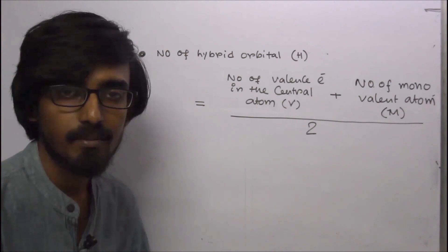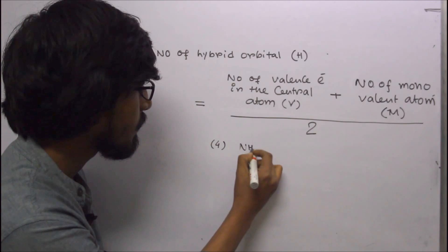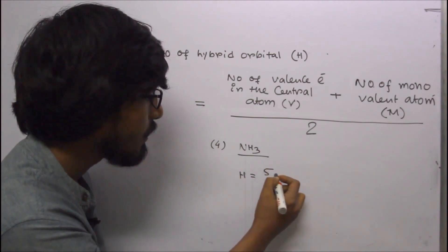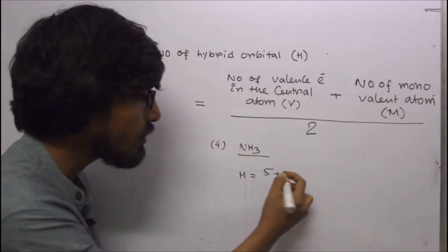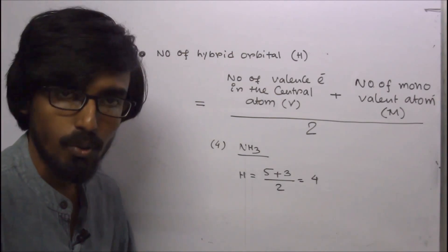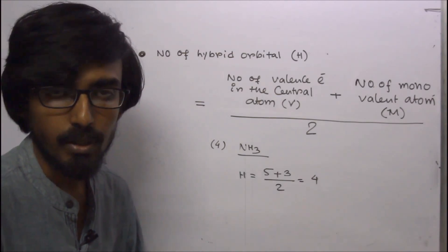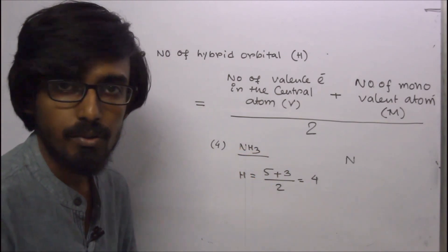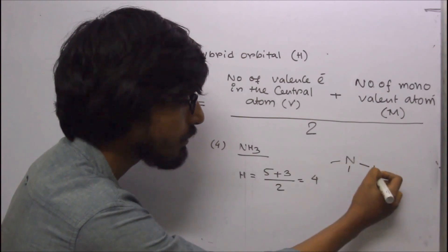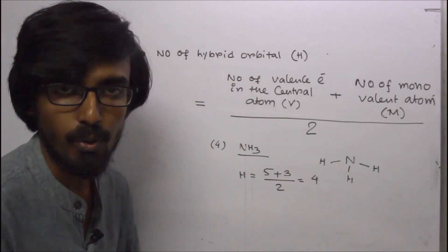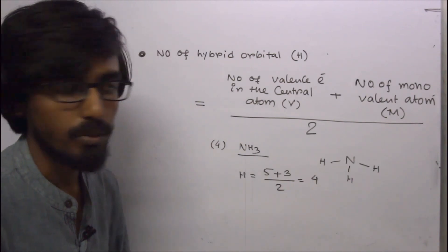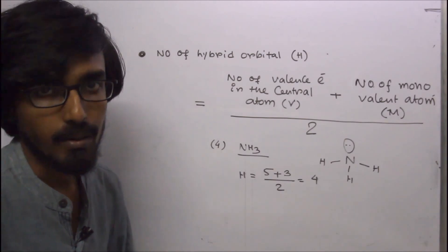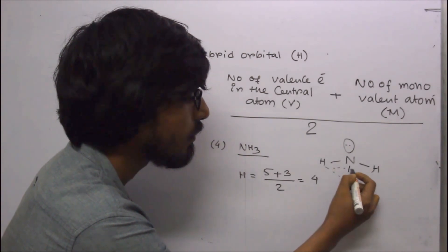For ammonia: number of hybrid orbitals = (valence electrons of nitrogen + monovalent atoms) ÷ 2 = (5 + 3) ÷ 2 = 4. Hybridization of nitrogen is sp3. Three hydrogen atoms are attached, giving 3 bond pairs. Total hybrid orbitals = 4 and bond pairs = 3, so there is 1 lone pair. The shape of ammonia is pyramidal.